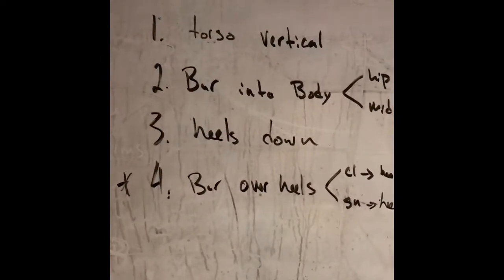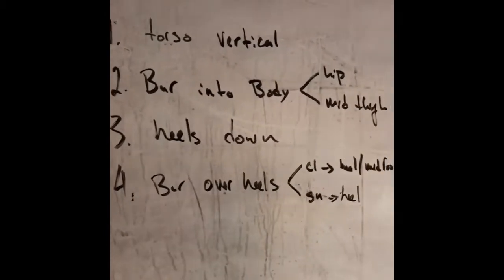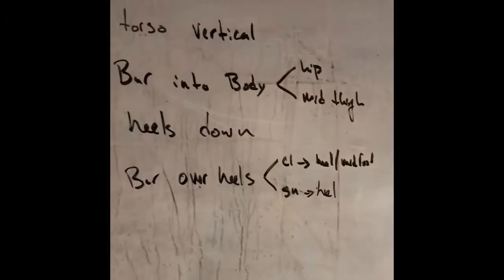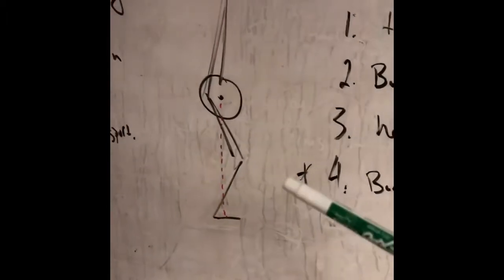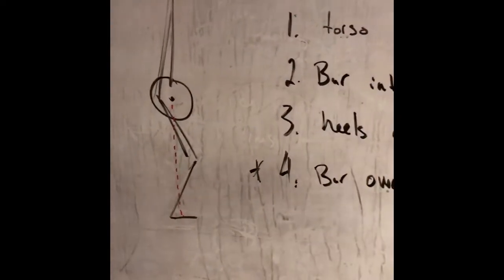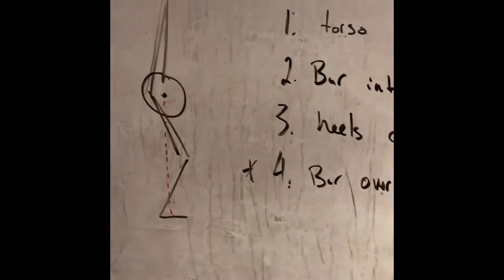The second thing is the bar is into the body. For the snatch, it's going to be into the hip crease, and for the clean, it's going to be into the mid thigh. We see that right here. The bar is into the hip crease, so this is probably a snatch. We want the bar into the body. Don't be reaching for the bar with the hips. Bring the bar to the body.